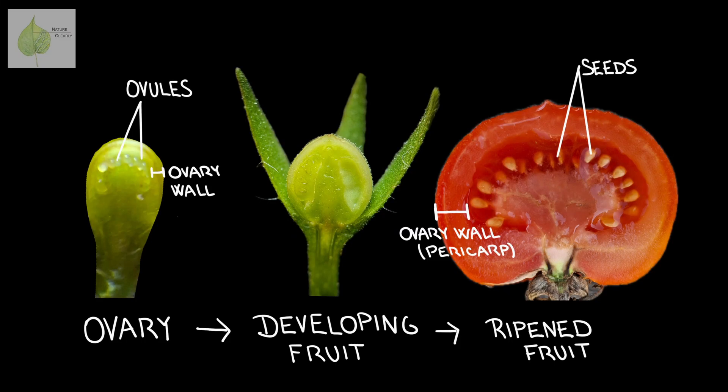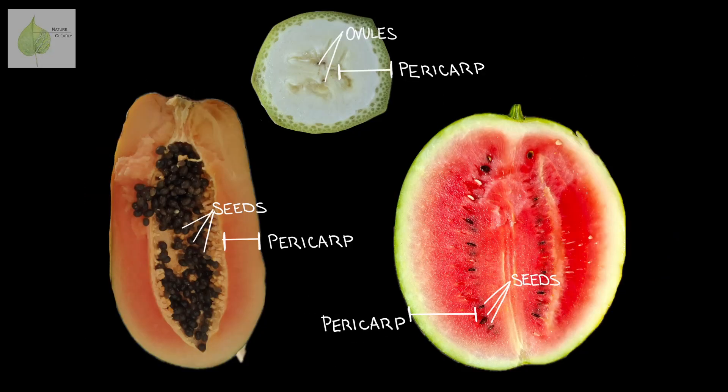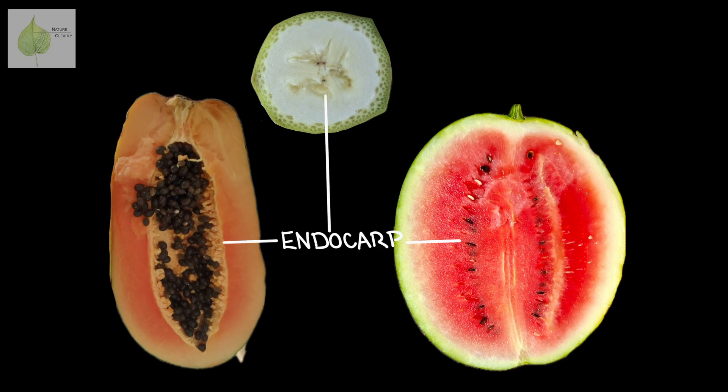Surrounding the seeds, we have the ripened ovary — specifically the ovary wall, called a pericarp. The pericarp is composed of three layers that are more or less distinct, depending on the type of fruit. Today we will stick with fleshy fruits, as in dry fruits these layers are not differentiated. Immediately surrounding the seeds, we have this sort of compartment or chamber. This is the endocarp, the innermost pericarp layer. The endocarp can come in different forms, just like any other pericarp layers.